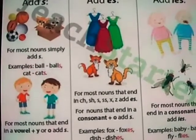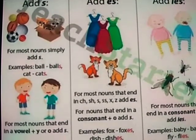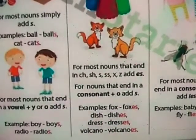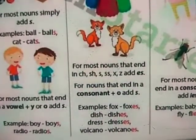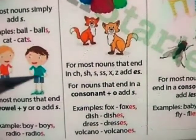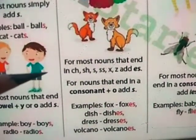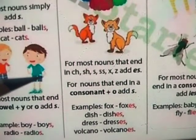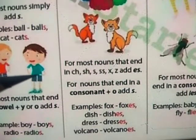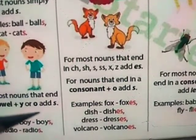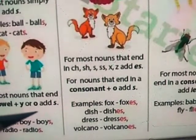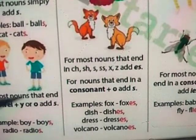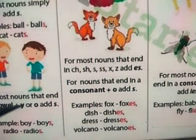Now, adding -ES. When can we add -ES? For most nouns that end with CH, SH, S, SS, X, or Z, we add -ES. For example, fox — we add -ES to make foxes.